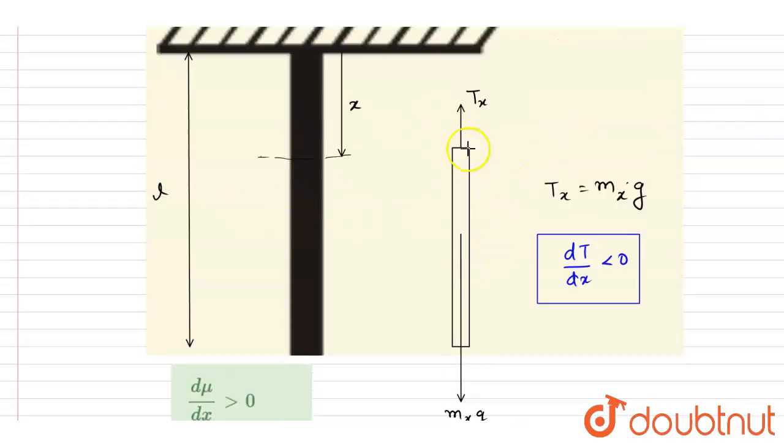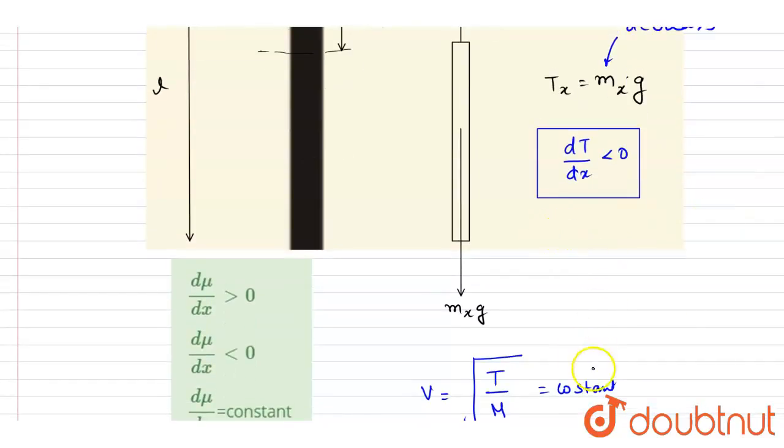Because if you cut it, you can see very clearly that the mass below the cut part is decreasing by increasing the x. If you increase the x, the mass mx will decrease, so the tension will decrease. If you see, this will decrease, so tension will also decrease. So basically to make this constant, the mu would also decrease.